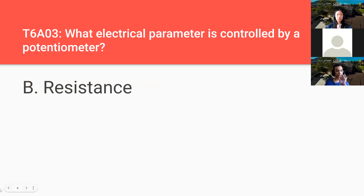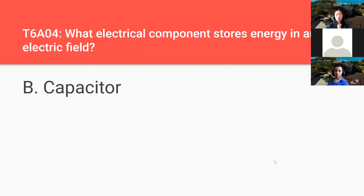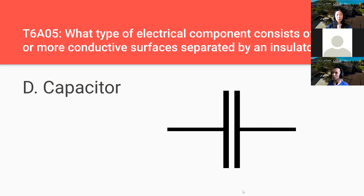What electrical parameter is controlled by a potentiometer? Resistance — it varies the resistance. What electrical component stores an electric field? A capacitor. What type of electrical component consists of two or more conductive surfaces separated by an insulator? A capacitor.